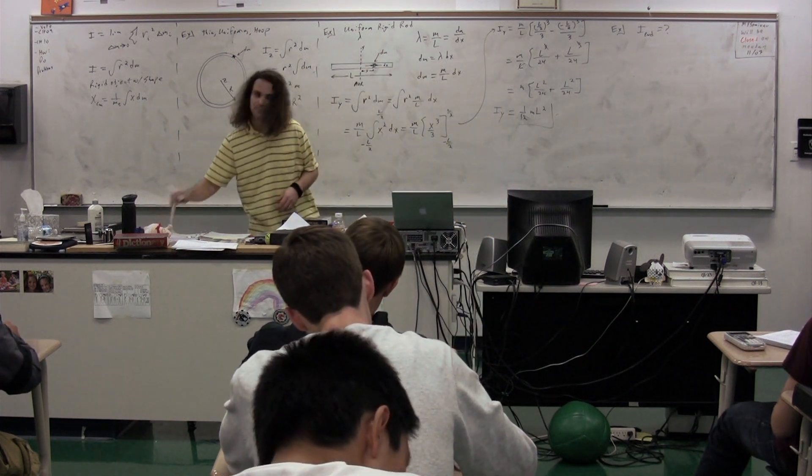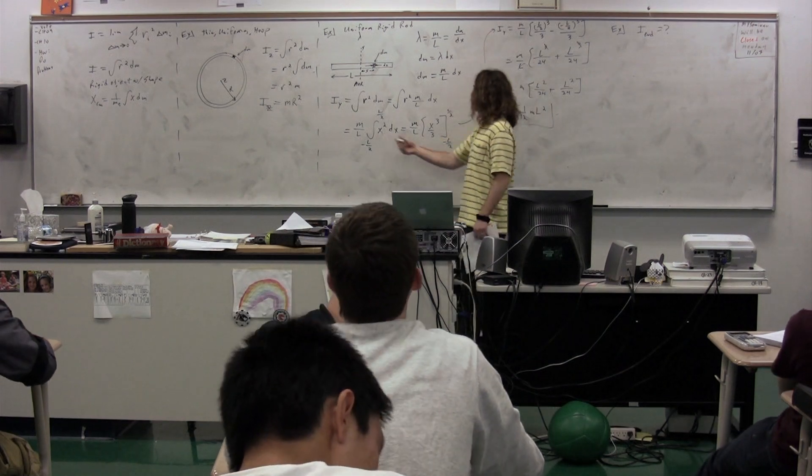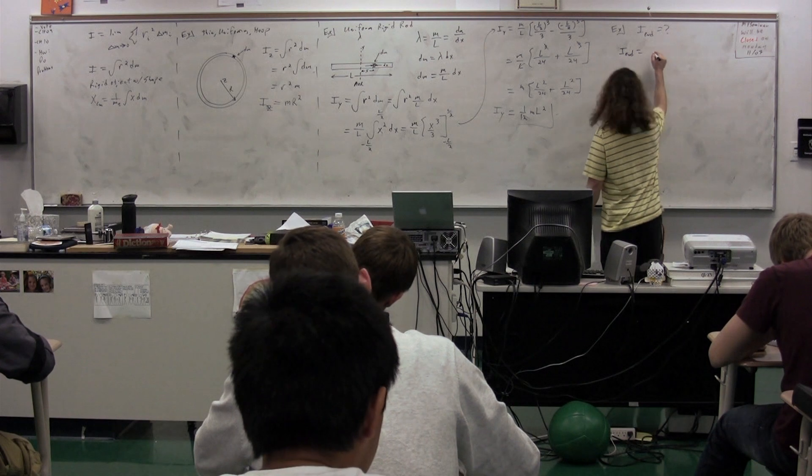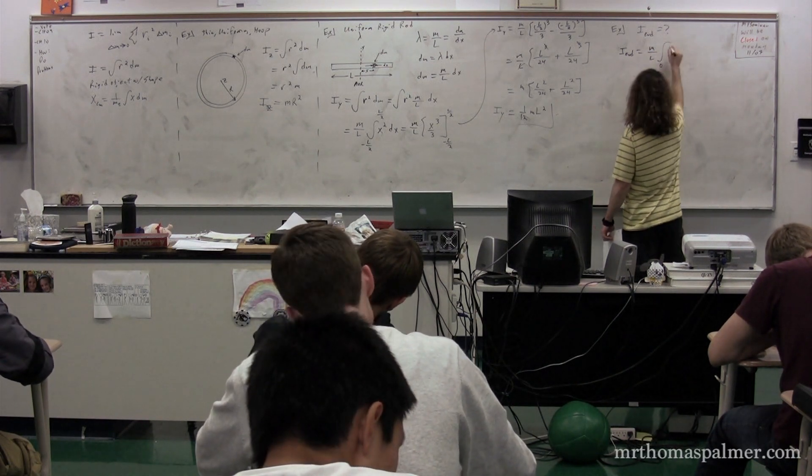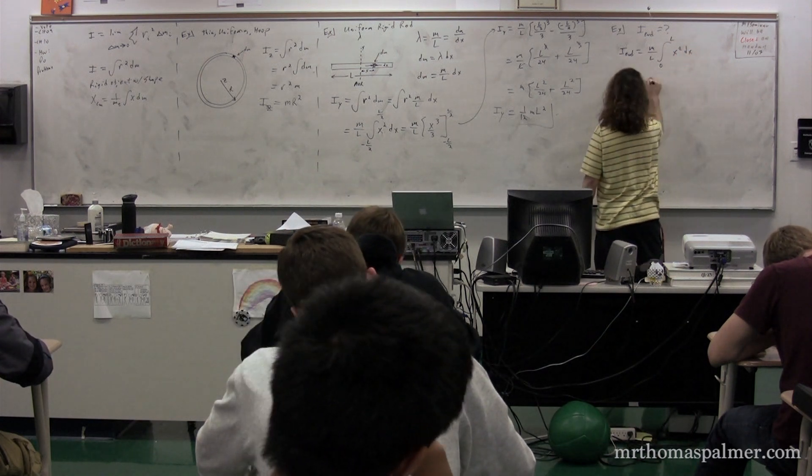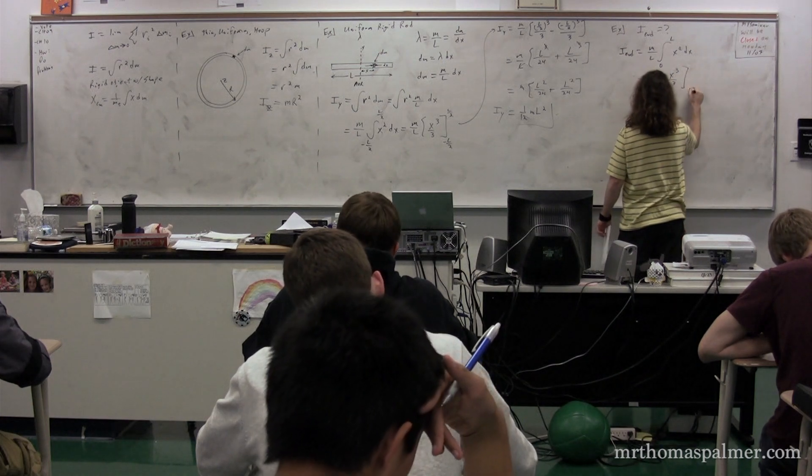So I come back to where we added the limits, which was, let's go right here. We have the moment of inertia about the end then is going to be equal to m over L times the integral from 0 to L of x squared dx. So it's equal to m over L times x cubed over 3 from 0 to L.